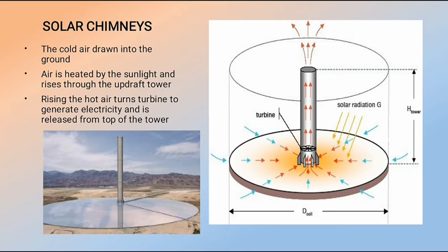The solar chimney has three main parts: collector, turbine, and chimney. The collector produces hot air using the greenhouse effect; it is usually made of glass or thin film and covers a large area five to six meters above the ground. Being a glazed collector, it converts about 70% of solar radiation into heat. The turbine, placed horizontally inside the chimney, is driven by the rising hot air to generate electricity and extract maximum energy.